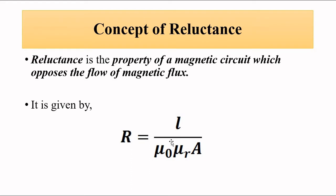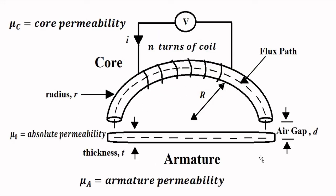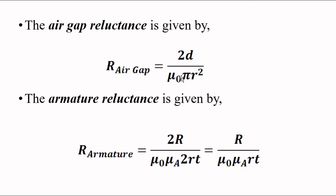Reluctance is given by the length of the flux path divided by the product of absolute and relative permeability and the area of the flux path. In the inductive sensor, three reluctances come into play: core reluctance, armature reluctance, and air gap reluctance. Core reluctance is given by r/(μ₀ μ_c π r²), air gap reluctance is 2d/(μ₀ π r²), and armature reluctance is r/(μ₀ μ_a r t).